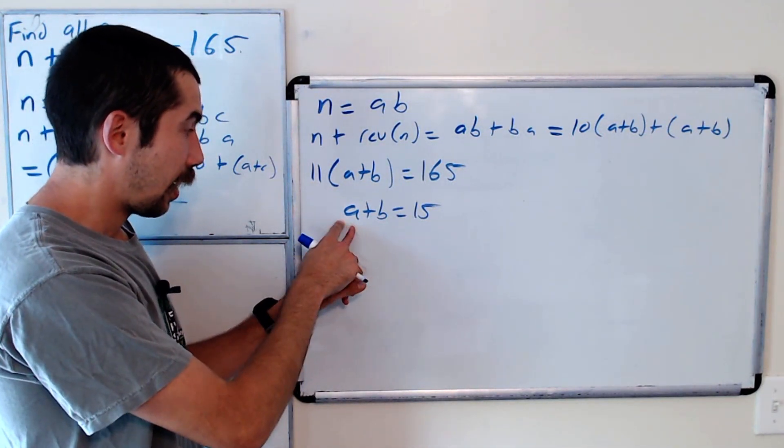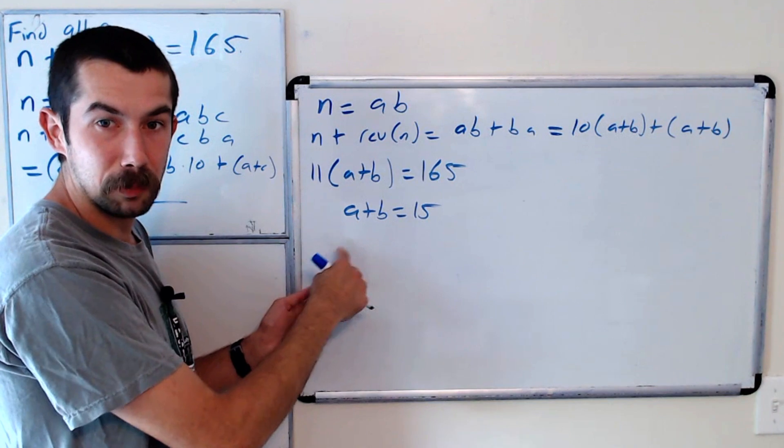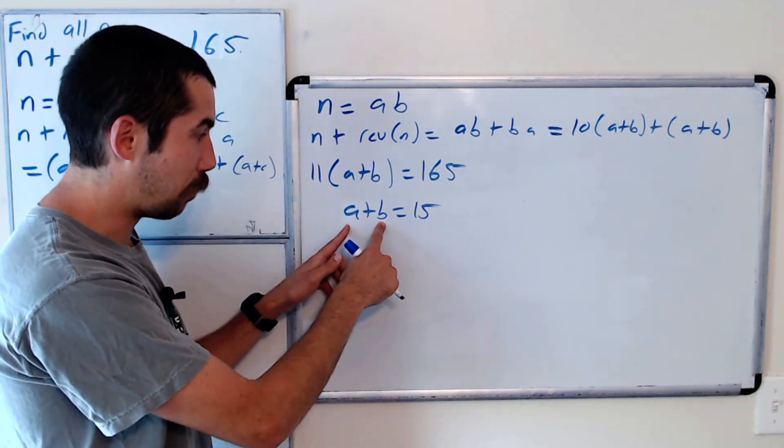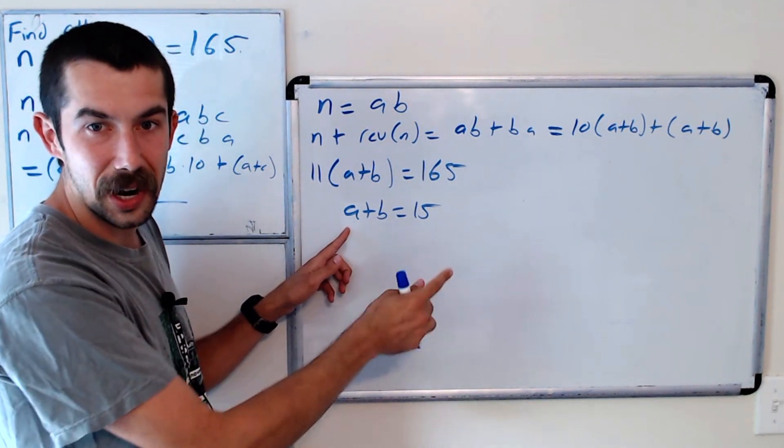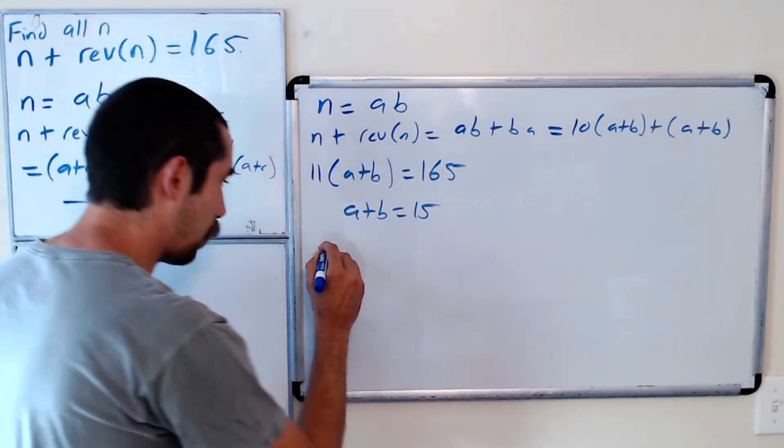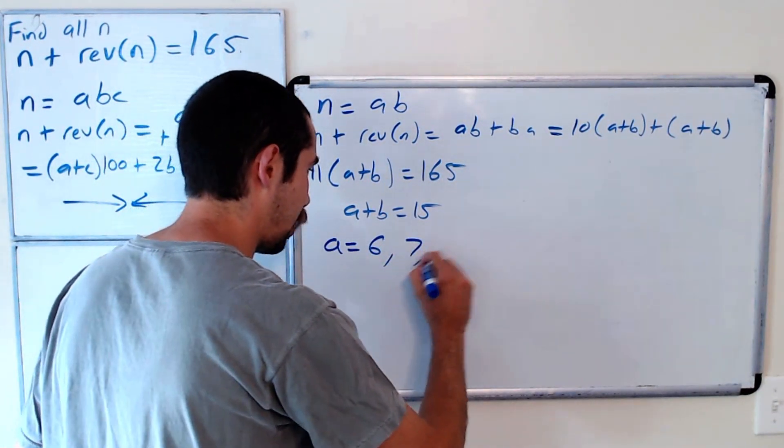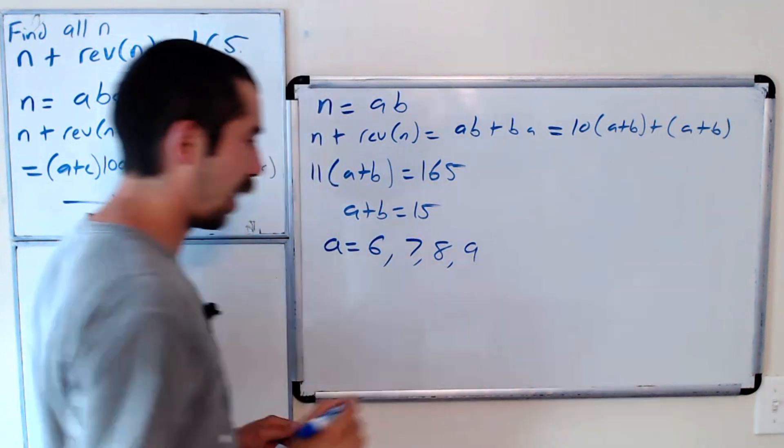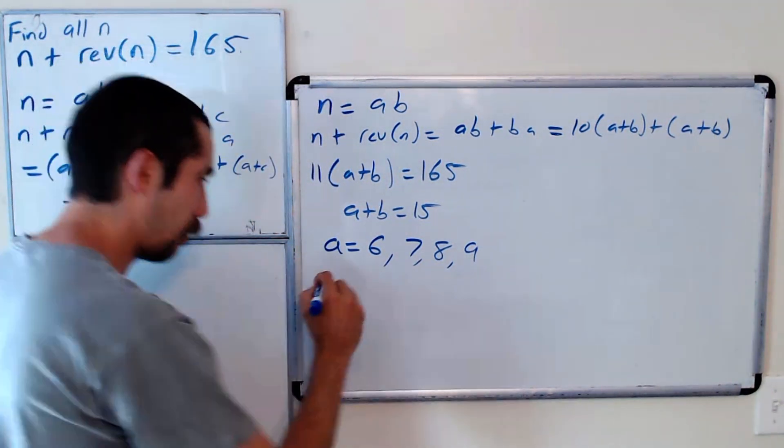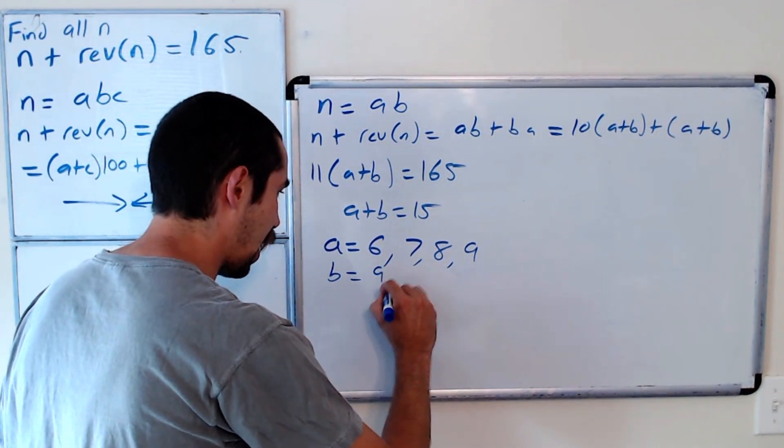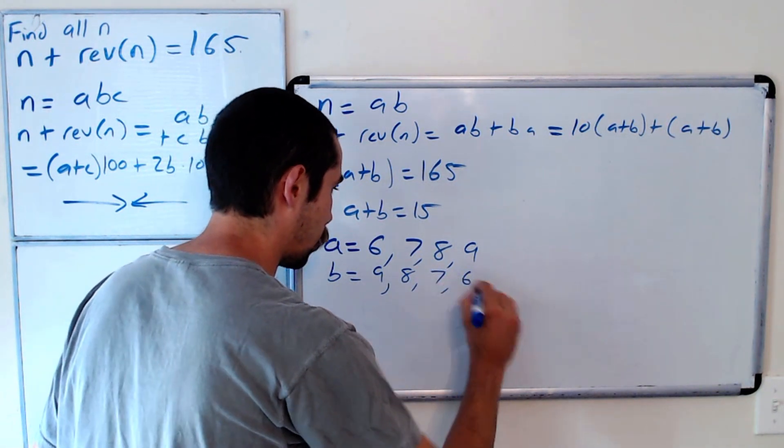Well, if a was 5 or smaller, then b would have to be bigger than 10, which is impossible. So the options are: a could be 6, 7, 8, or 9, and then in that case, b would be 9, 8, 7, or 6.